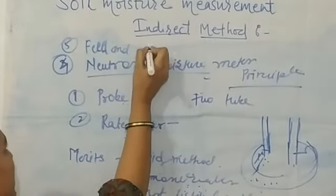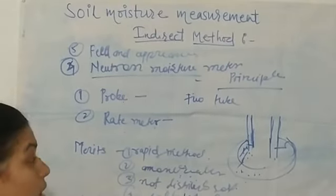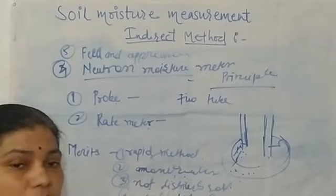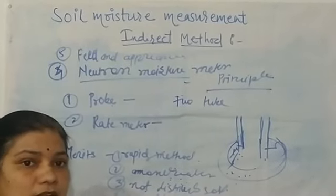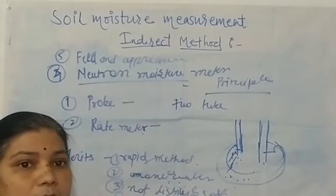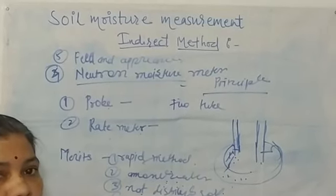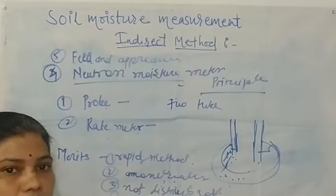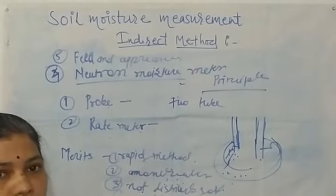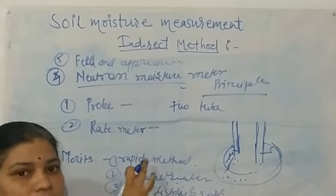The last method is the feel and appearance method. This is the oldest and most useful method for farmers. It is based on the visual appearance of soil moisture — you take soil in your hand and squeeze it with your fingers to detect moisture content. However, this method does not give an accurate determination of moisture content. This concludes the discussion of indirect methods of soil moisture measurement.